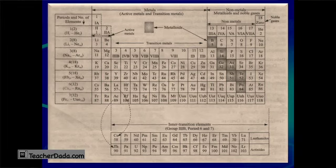On the basis of his studies, the modern periodic law was given. It states that the physical and chemical properties of all elements are a periodic function of their atomic numbers. The previous scientists were considering atomic mass or atomic weight as the basis of periodic classification, but modern scientists said that atomic number is a more fundamental property. Therefore, the new modern periodic law was given.